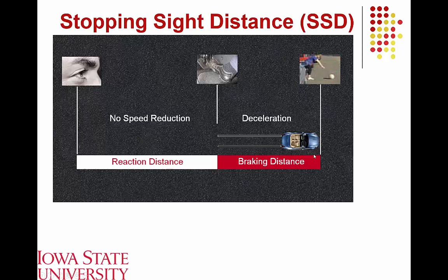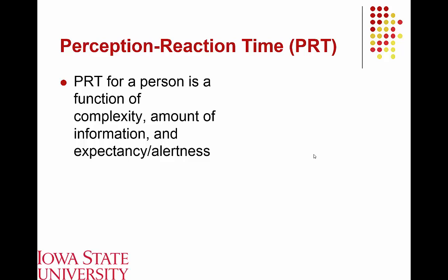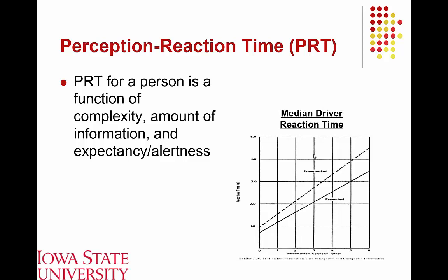Stopping sight distance equals reaction distance plus braking distance. Perception-reaction time measures how quickly people are able to react to a situation, and is a function of how much information the driver must process, how expectant they are of needing to stop, how alert they are, and how complex the message is. Human factors research shows that as messages become more complex — with more bits of information — reaction times increase. Reaction times are also longer in unexpected versus expected situations.